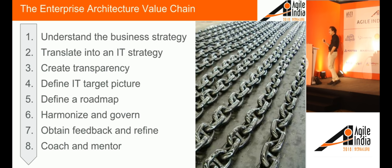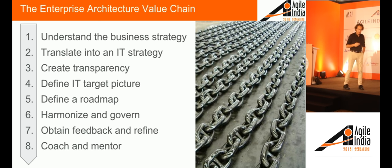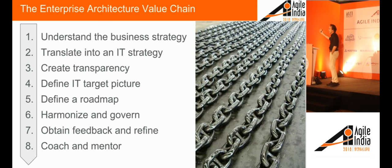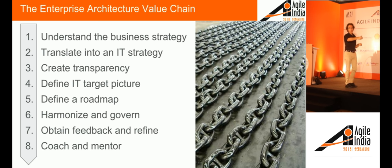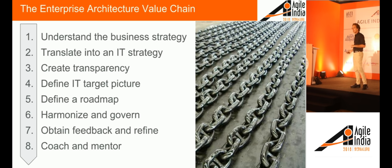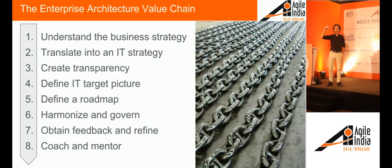There isn't an easy three-step process for how enterprise architecture works. But what can help is to look at what I call the enterprise architecture value chain. You're working for a business, so you need to create value. Just like a business has a value chain — buying raw materials, assembling product, shipping product — enterprise architecture also has a value chain. The reason it's called a chain is because if one link is broken, the chain is broken. So if as an enterprise architect you skip or miss one of these items, you're not providing value.